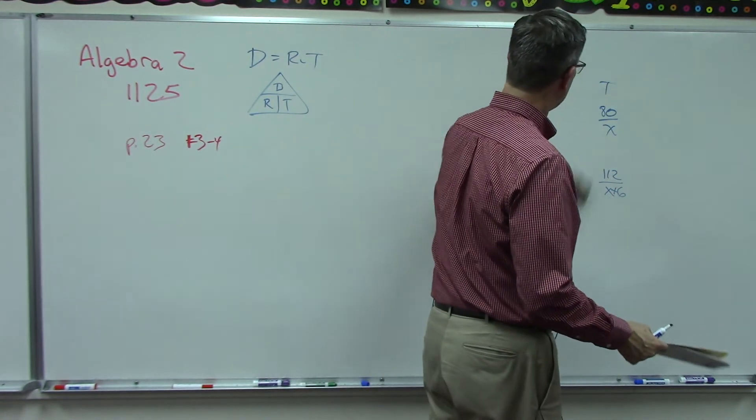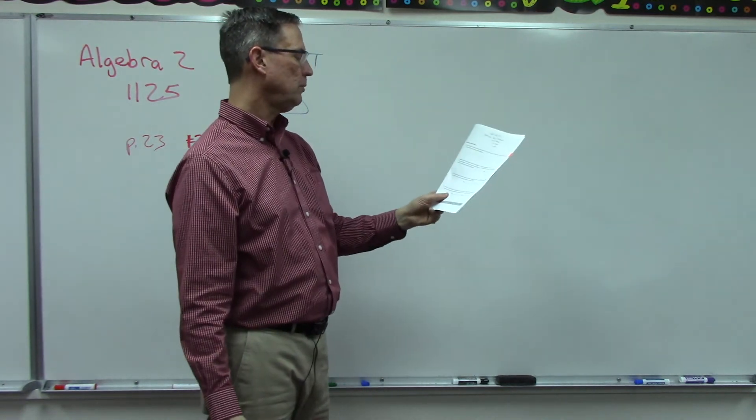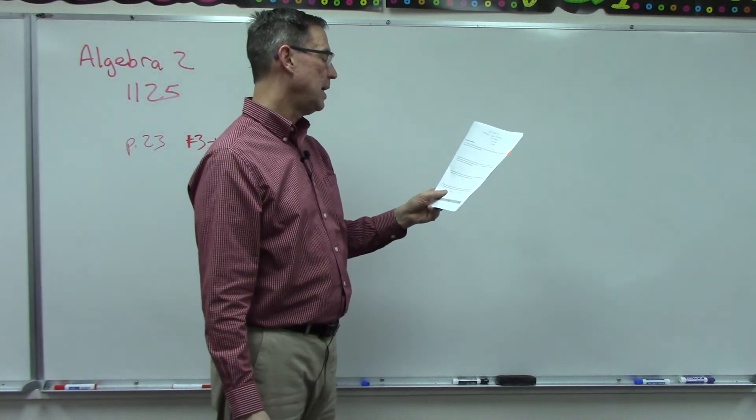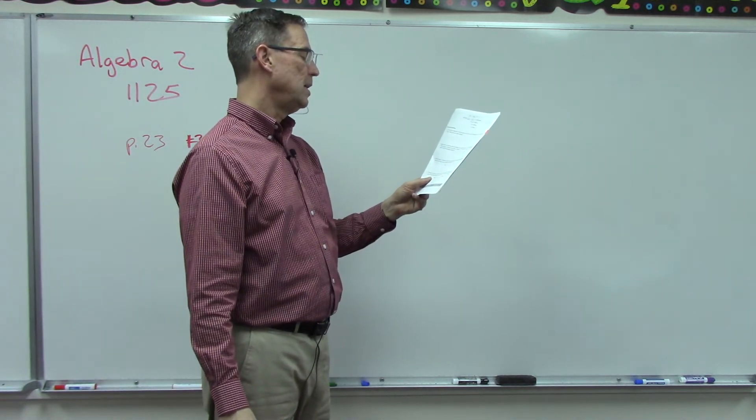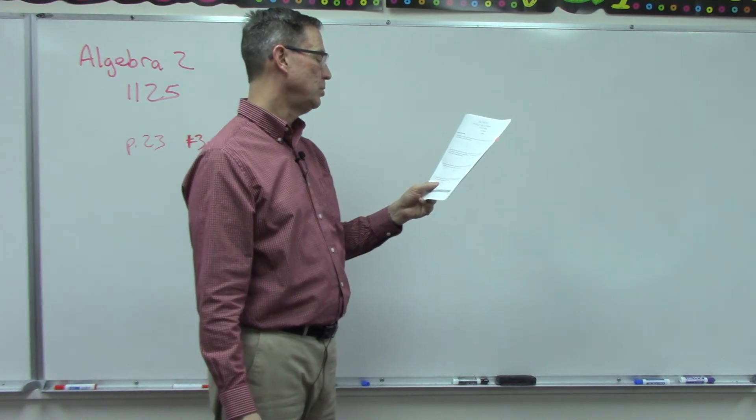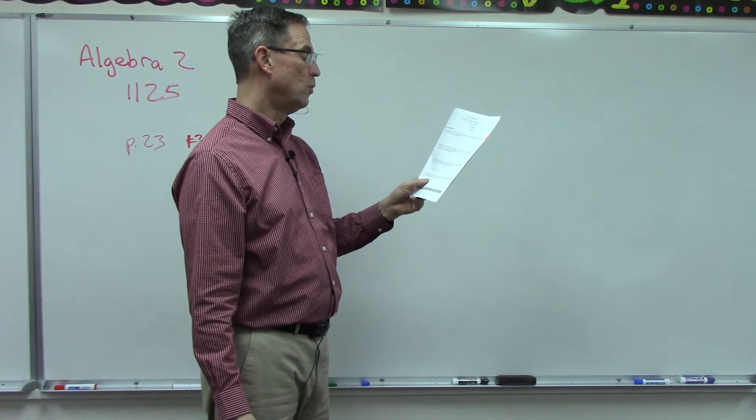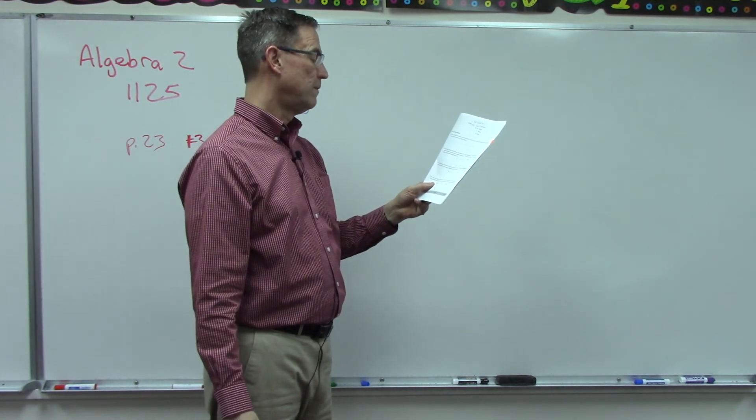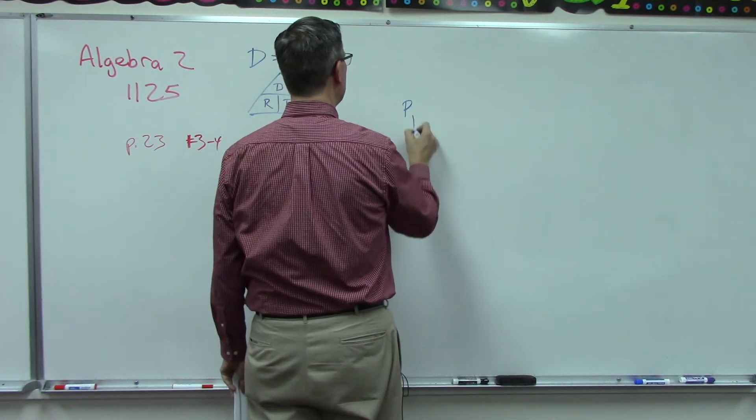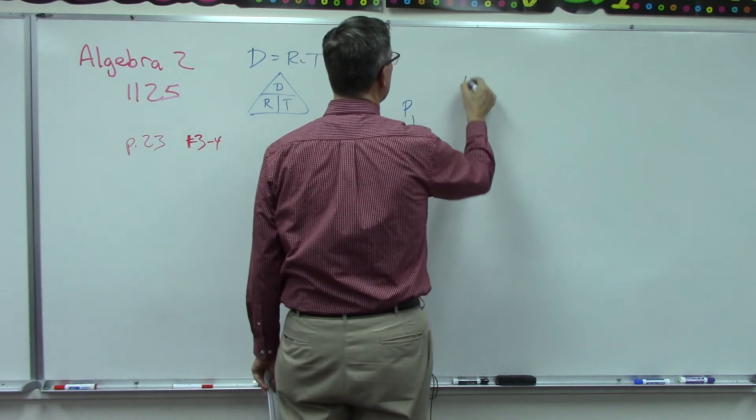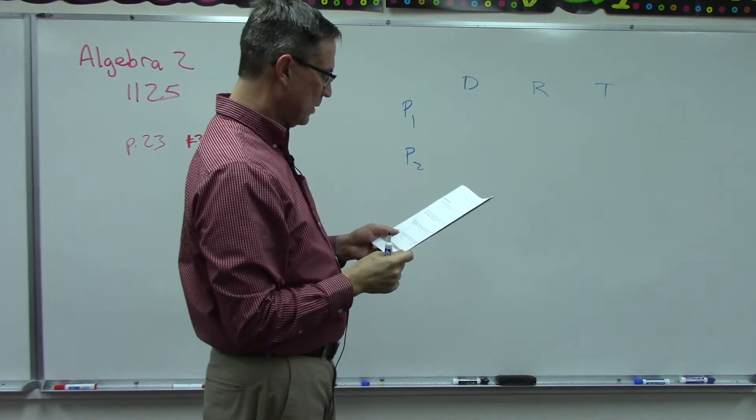We did the hard part on that one. Sometimes it's just thinking it through and getting the equation set up, and then you can finish it. Number four: the rate of one plane is 80 kilometers an hour less than that of the second. If the first plane takes six and two-thirds hours to travel the same distance that the second plane travels in four hours, find the rate of each.